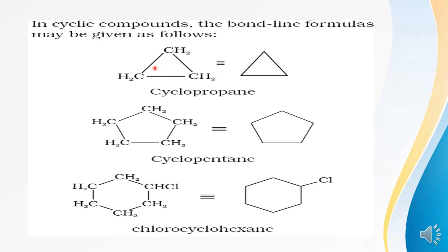If I want to represent cyclopropane as a bond line formula, I simply remove the carbon and hydrogen atoms and turn the compound into a simple triangle, where each corner of the triangle indicates that a carbon atom is present. By default, the valency of each carbon atom is fulfilled by hydrogen atoms: two valencies are fulfilled by bonding with the other two carbon atoms, and the remaining two valencies are fulfilled by bonding with two hydrogen atoms.